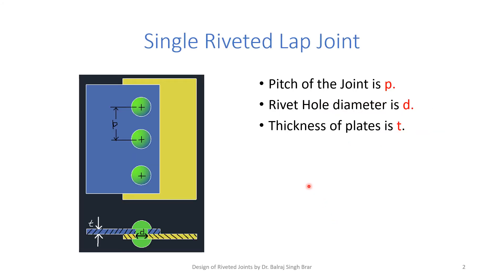To explain the concept of tearing, we take a single riveted lap joint: two plates overlapping each other, each having a thickness T. The rivet hole diameter is D and the pitch of the rivets is small p.